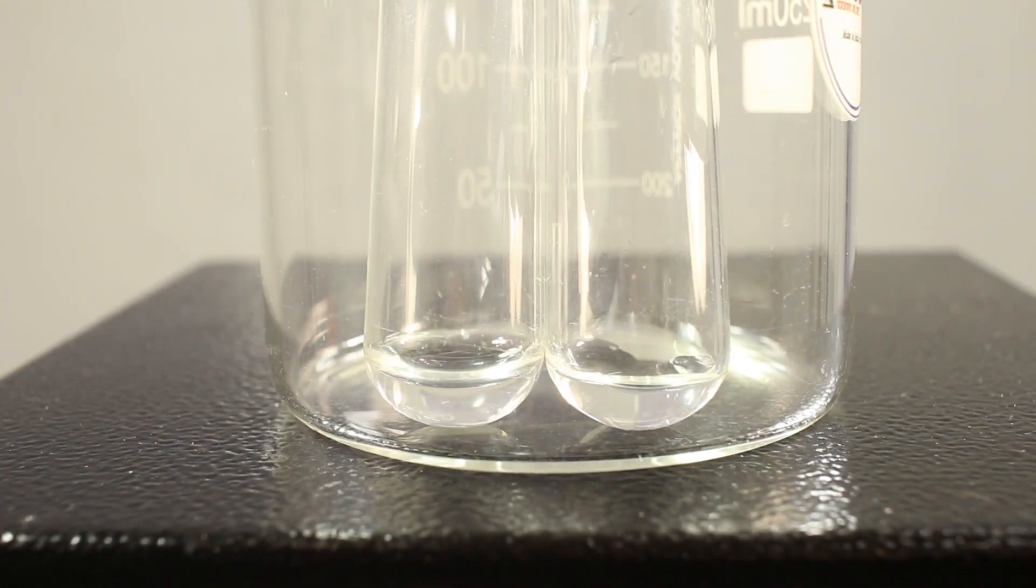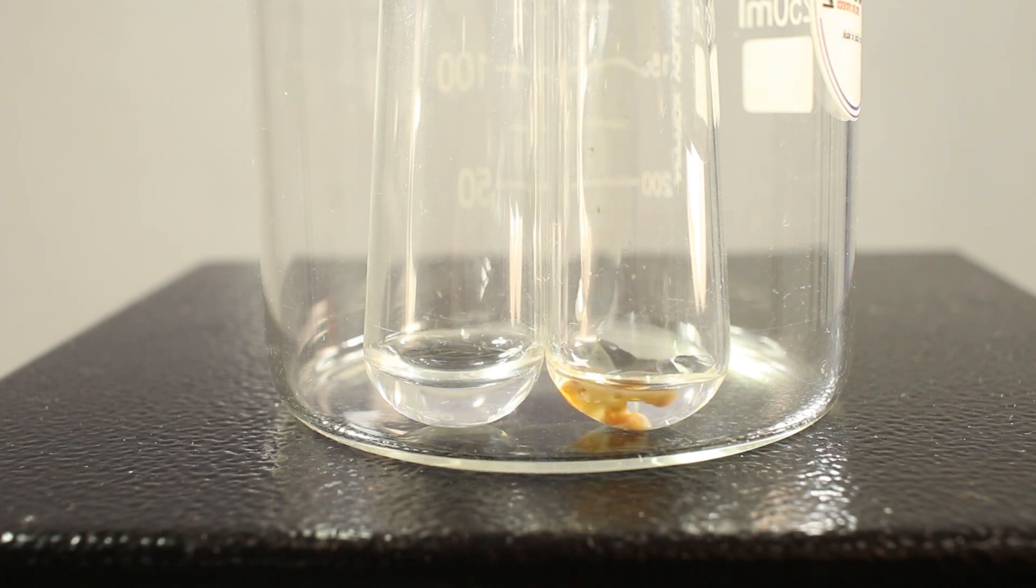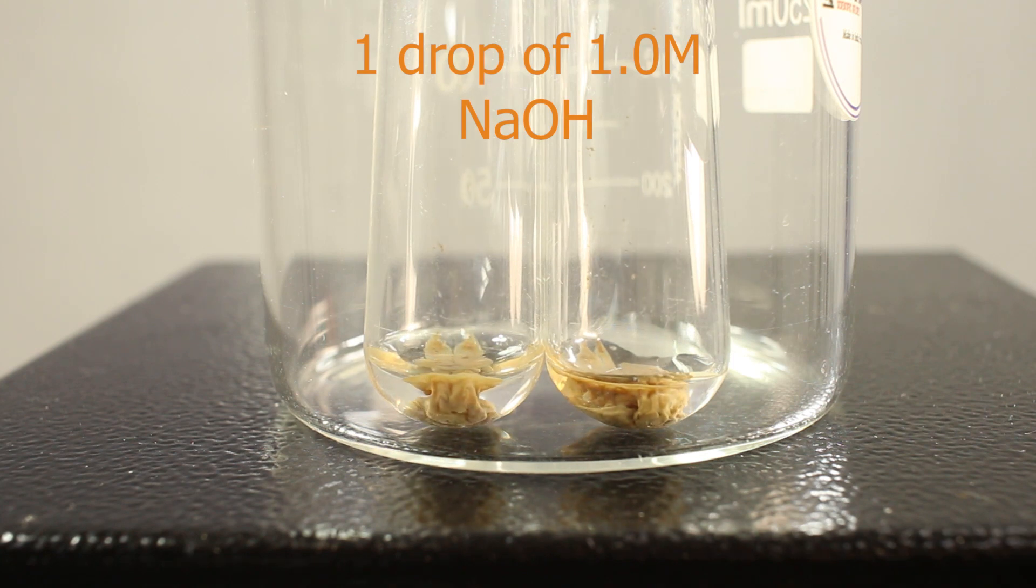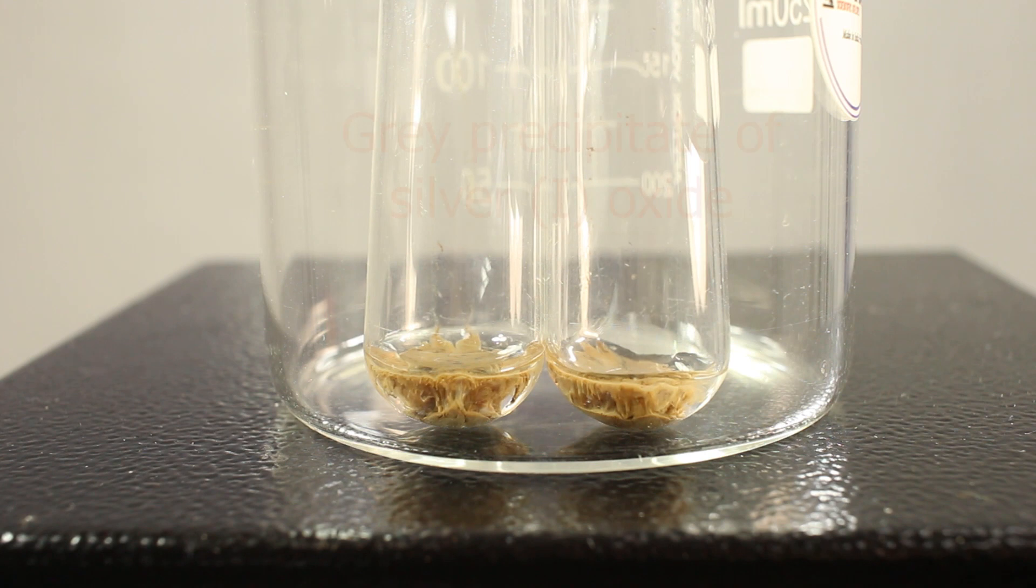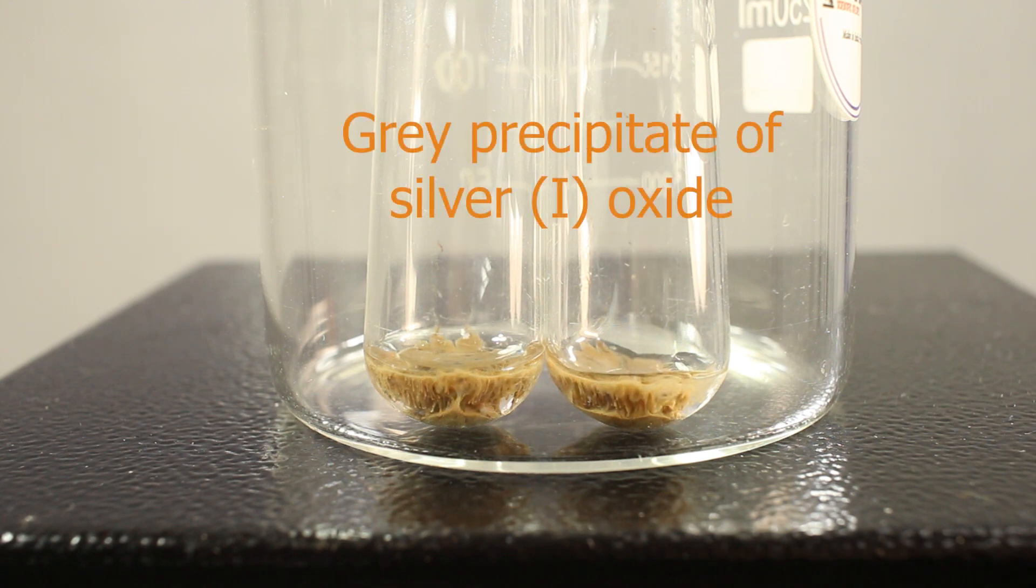Now we're going to put one drop, would be enough, of sodium hydroxide in each. You see, silver oxide or hydroxide is insoluble, forming brown-grey precipitate.